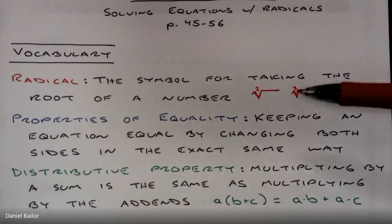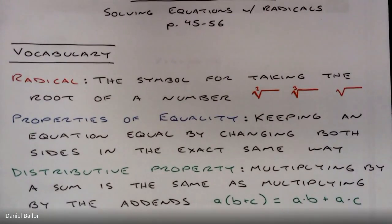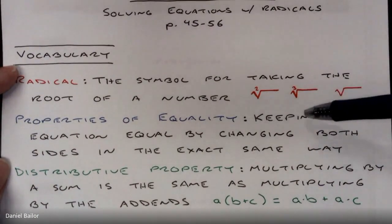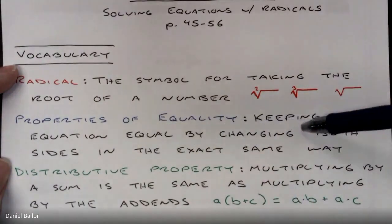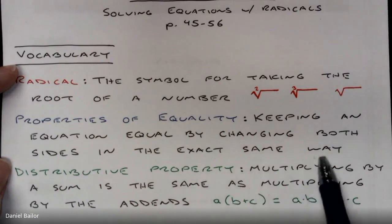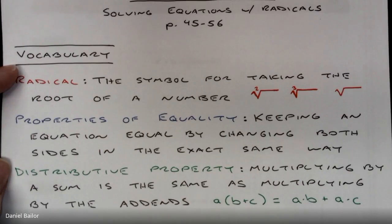We also have the properties of equality — the addition property, subtraction property, multiplication property, and division property of equality. Those are the four basic operations, and they are how we make an equation stay equal. We use the properties of equality to keep an equation equal by changing both sides in the exact same way. If I subtract on one side, I have to subtract on the other.